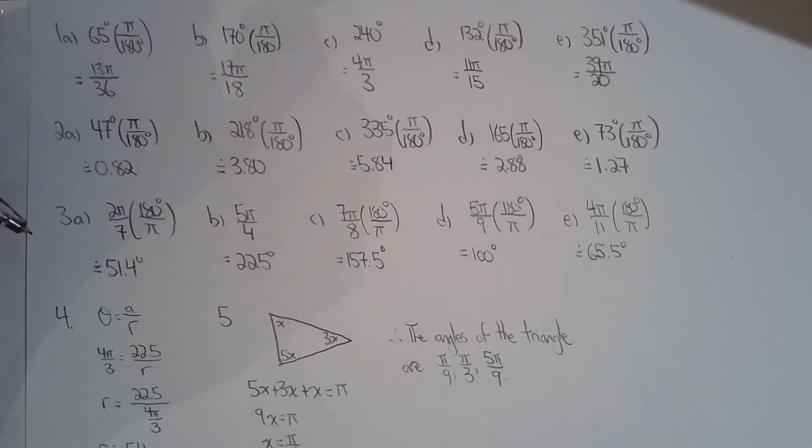How about 3? Question 3 is pretty similar to 1 and 2 as well, except that now we want to find the angle in degrees when it's given to us in radians. Once again, as long as you know that 180 degrees is equivalent to pi radians, then these questions are pretty straightforward.